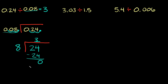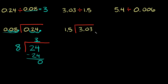Hopefully that wasn't too confusing. Let's do a couple more examples and then it's going to start making a lot more sense. Here we have 3.03 divided by 1.5. Your first step is just going to be rewriting it like this: 3.03 divided by 1.5.